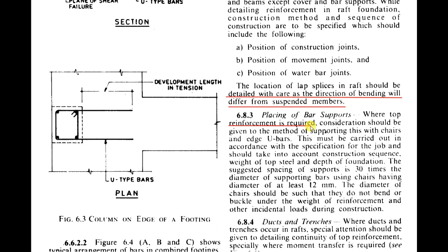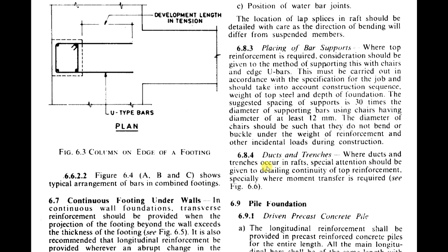Where top reinforcement is required in raft foundations, consideration should be given to supporting it with chairs and edge U-bars. The suggested spacing of supports is 30 times the diameter of the supporting bar, using chairs with a diameter of at least 12 mm. The chairs must not bend or buckle under the weight of reinforcement and other incidental loads during construction.